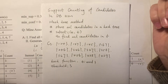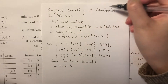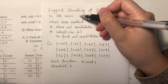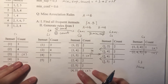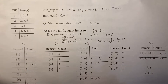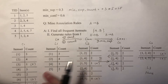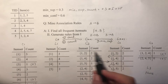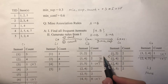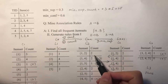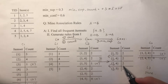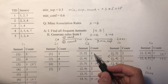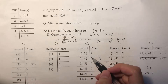Hi everyone. Today I'm going to talk about support counting of candidates in database scan. In the Apriori algorithm, we do this support counting after we get these candidates from the previous level. Then we get the occurrences of each candidate, and then we determine who passed the minimum support count to be the actual frequent items. In this process, we need to get the occurrences of these candidates — how do we do that?